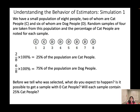Now we want to draw four people from the population as my sample. What do you expect to happen? Is it possible to get a sample with zero cat people? Yes — I could pick these four dog people, so the sample proportion would be zero. And will each sample contain 25% cat people? It really depends on how you pick. If I pick one cat and three dog people, I have 25% cat people. But if I pick four dog people, that's 0% cat people.